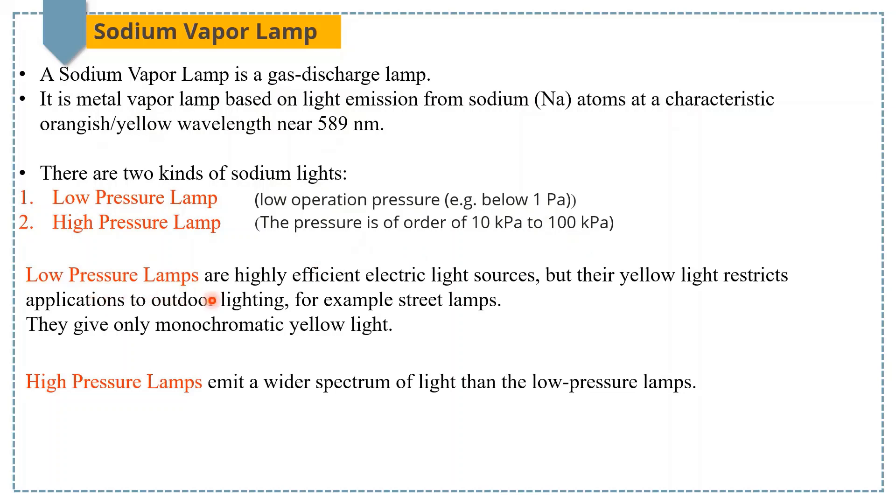Low pressure lamps are highly efficient electric light sources. But their yellow light restricts applications to outdoor lighting, for example, street lighting. They give only monochromatic yellow light. High pressure lamps emit a wider spectrum of light comparatively to the low pressure lamps.